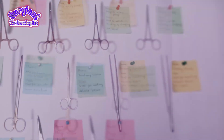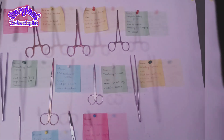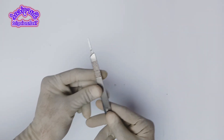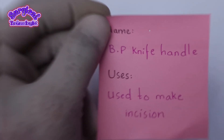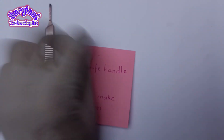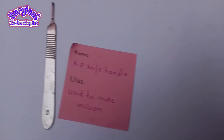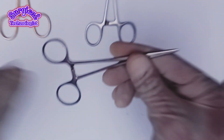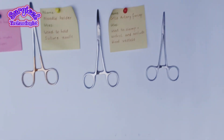Surgical instruments may look like simple pieces of steel, but in the hands of a skilled surgeon, these instruments become life-saving extensions of human precision. Today we are going to discuss some surgical instruments, their names and uses.